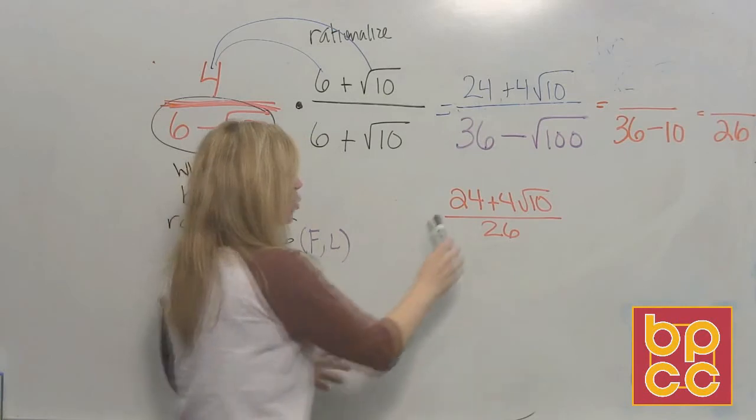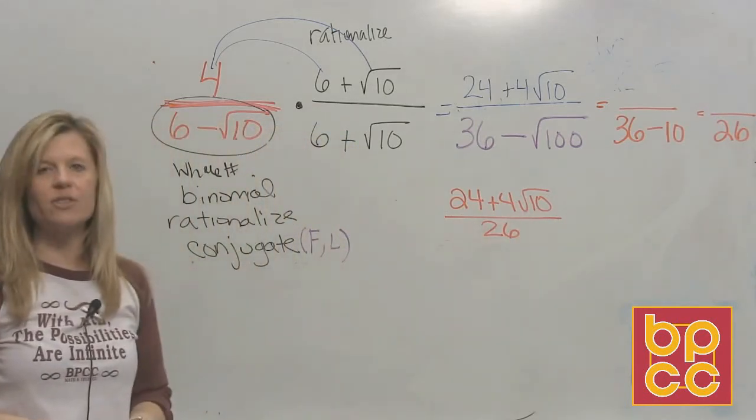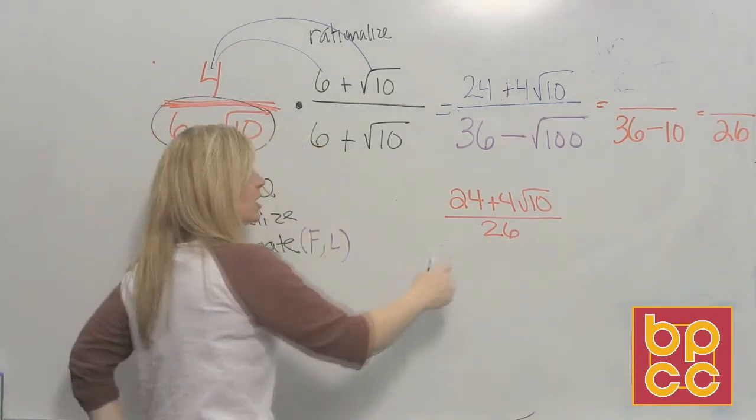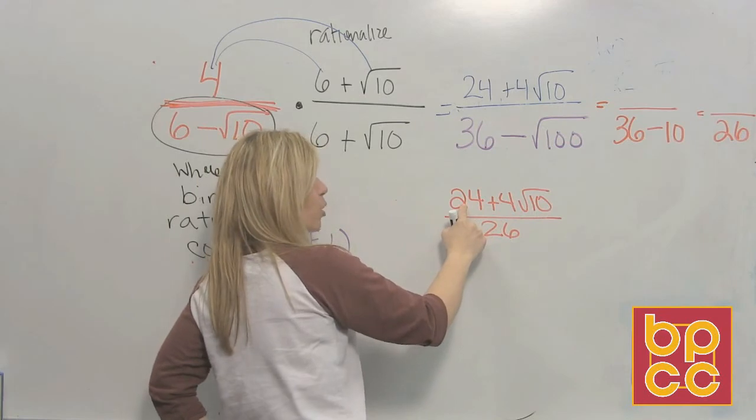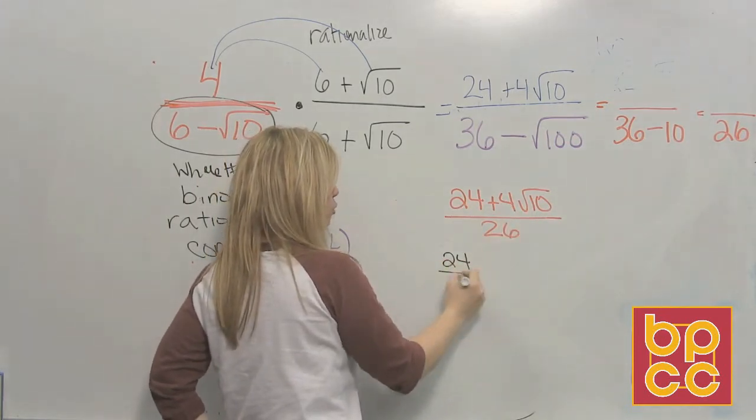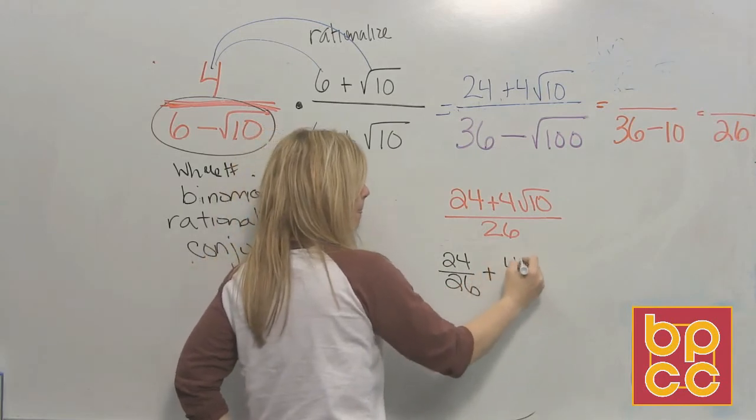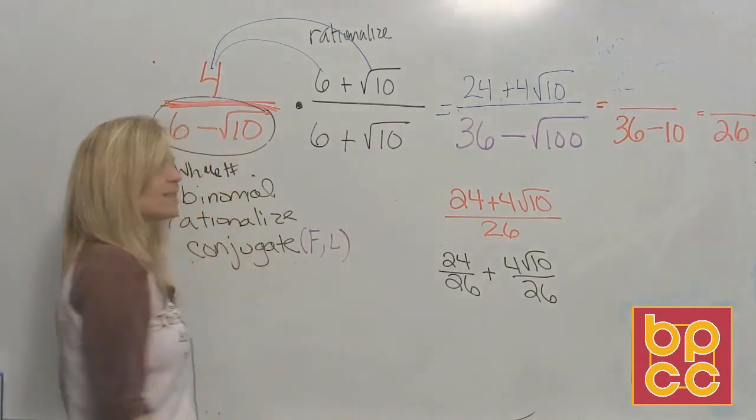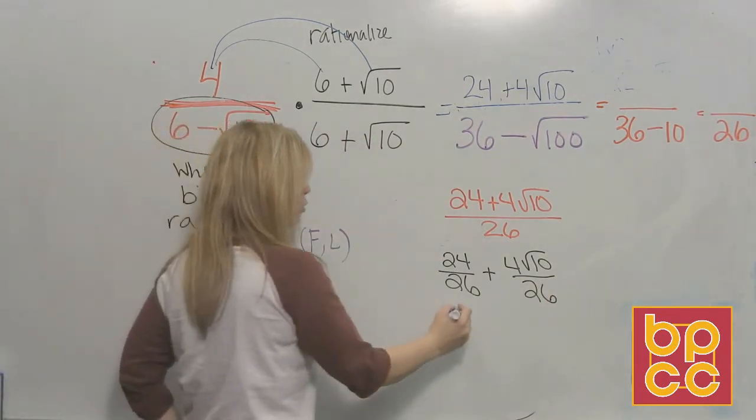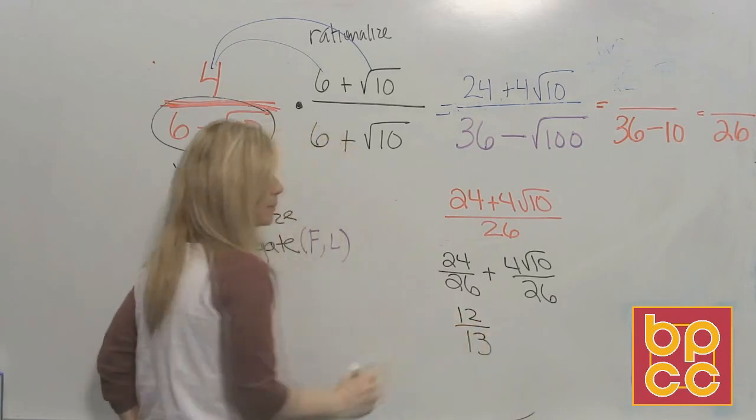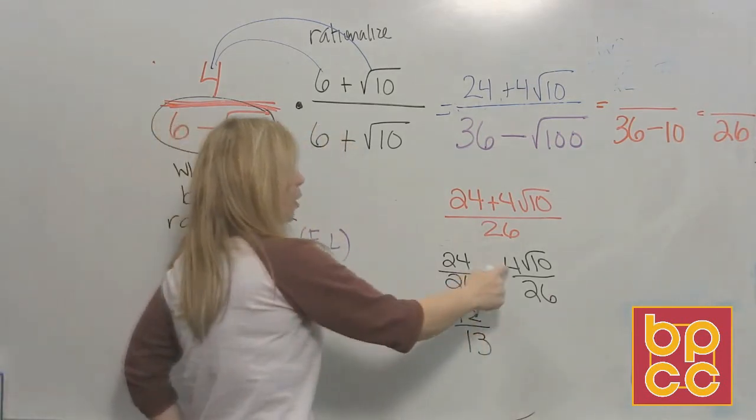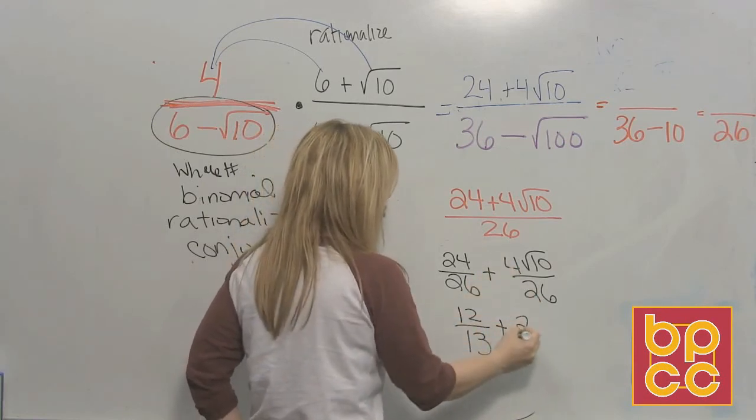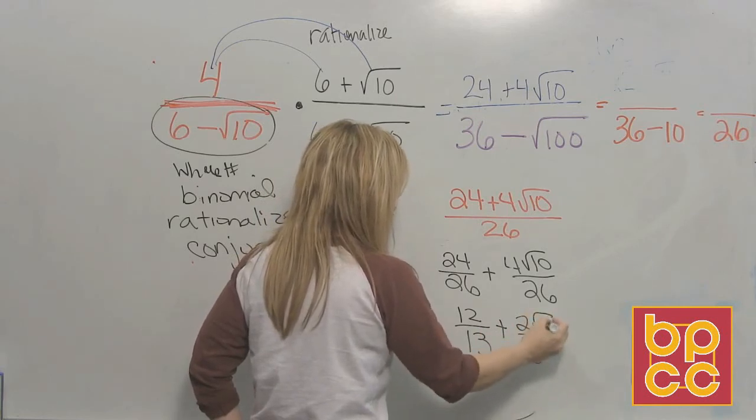And the reason why is what does this bar mean to do? That bar means to divide. We've already discussed this from our previous chapters. This divide by 26 belongs to both the 24 and the root. So we can break this up into two fractions. 24 over 26 are even numbers. They could be divided by 2. So that would give you 12 over 13. 4 is on the outside, 26 is on the outside. They're both even numbers. We could divide them by 2. So that would give us 2 over 13. And you would leave the square root of 10.